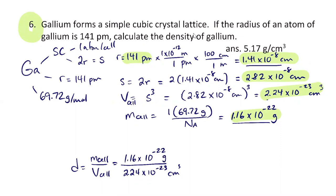Looking at those two numbers before dividing: 10⁻²² is bigger than 10⁻²³ so the answer will be roughly on the order of 10. Dividing 1.16×10⁻²² by 2.24×10⁻²³ gives a density of 5.18 grams per cubic centimeter. By 'around 10' I just mean within a factor of 10 — somewhere between 1 and 100.